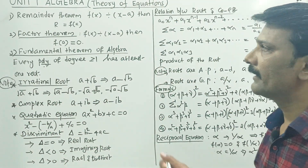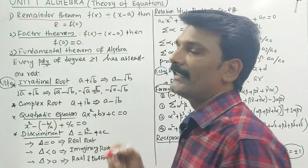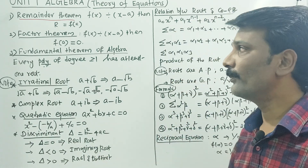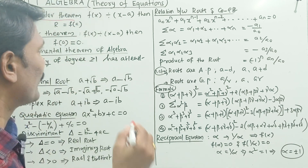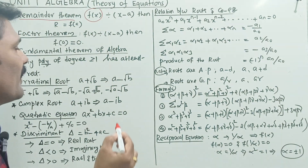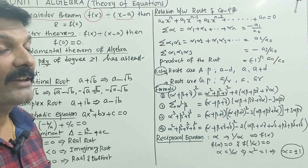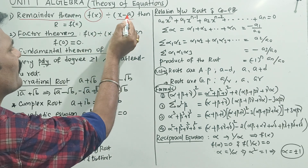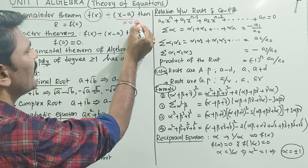1. Remainder theorem — just one glance. What is the 10th standard remainder theorem? I will show you a polynomial. f of x is a polynomial. x minus a — divide.